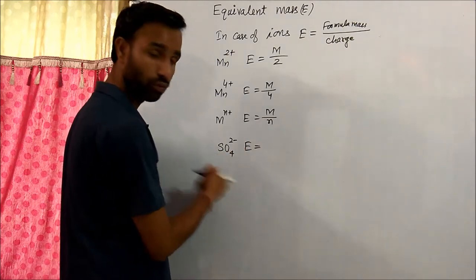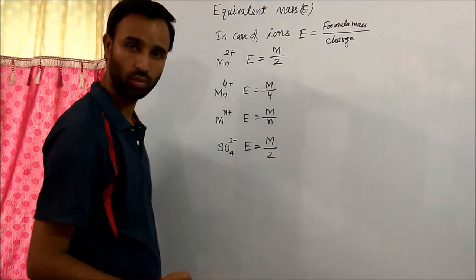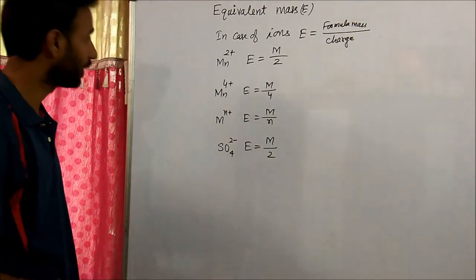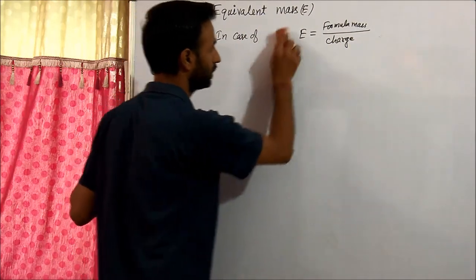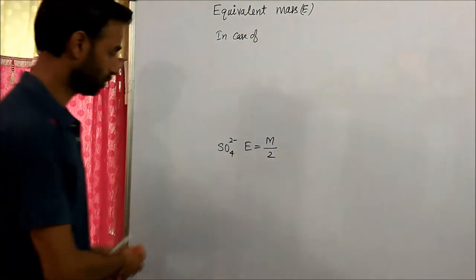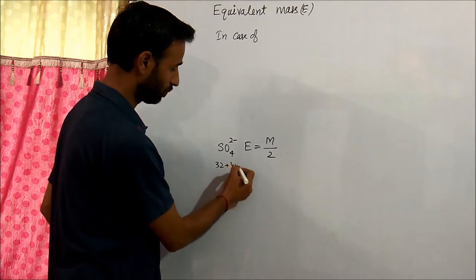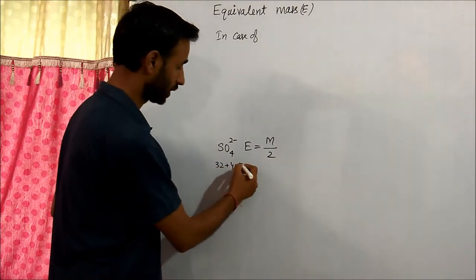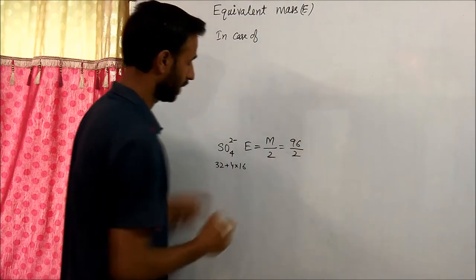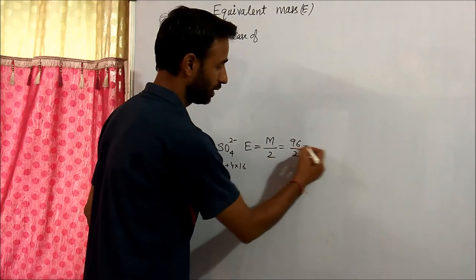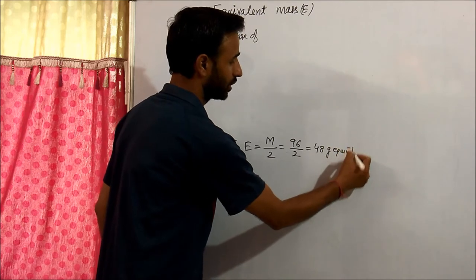For example, equivalent mass of SO₄²⁻ is M by 2. The formula mass of SO₄²⁻ is 32 plus 4 times 16, which gives 32 plus 64, equalling 96. So, 96 divided by 2 gives 48 gram per equivalent.